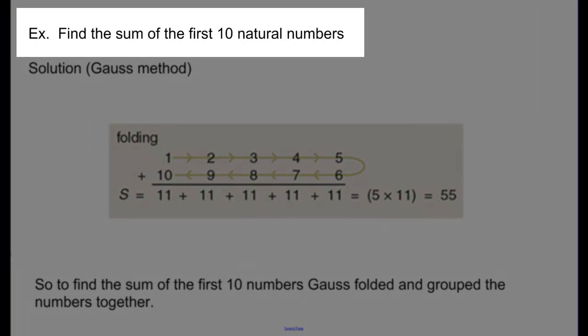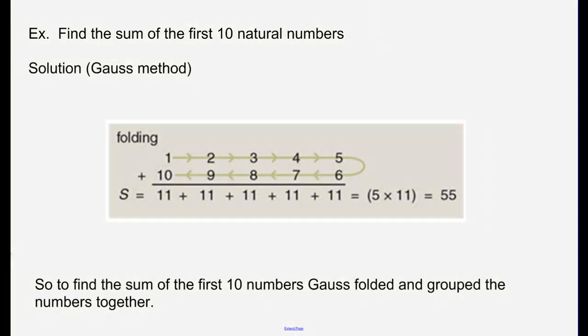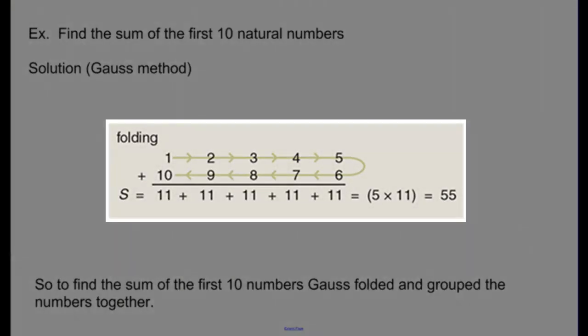Here's an example similar to the one Gauss faced. Let's find the sum of the first 10 natural numbers. So, add up 1 through 10. So, if we use the folding technique, we're going to take 1 and add it to 10, 2 and add it to 9, 3 and add it to 8, and so on. And there's 5 different pairs. So, 11 times 5 is 55.